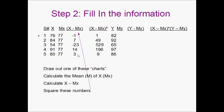And from there, we're going to square each of these numbers. This is going to be our X minus the mean of X squared. So negative 1 squared is 1. 7 squared is 49. Negative 23 squared is 529. 14 squared is 196. And 3 squared is 9.